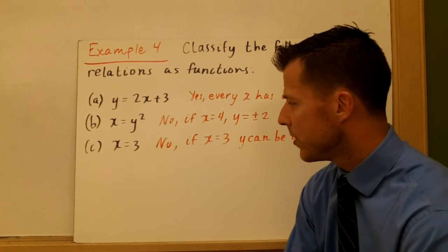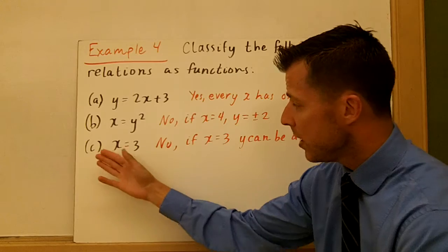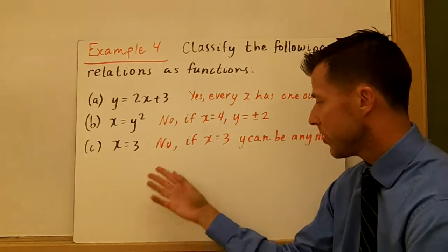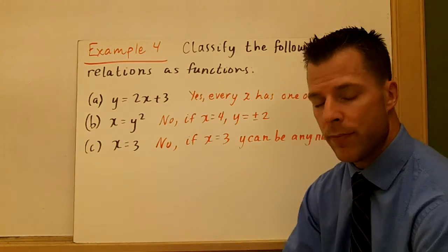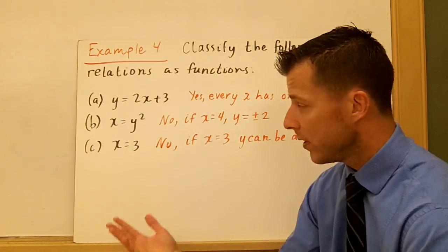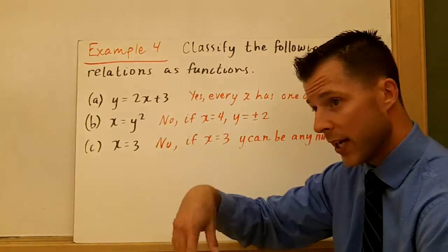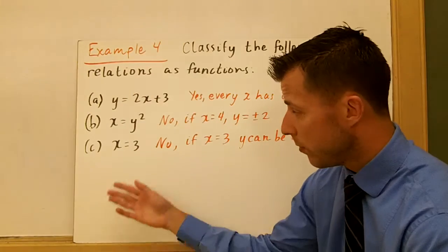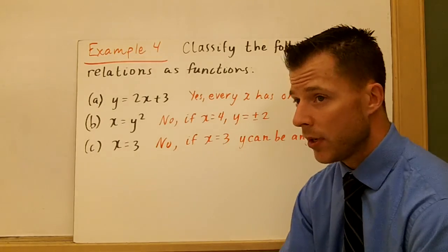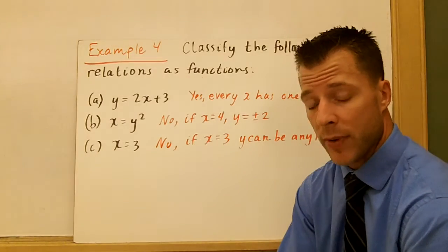In part C, x equals 3. This is also not a function. This is a vertical line. So if x is 3, it has millions of different y values. It's just a vertical line. So every y value is included at 3. So that's not a function because 3 has infinitely many y values.